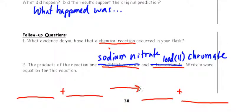Then follow-up questions. What evidence do you have that a chemical reaction occurred in your flask? So, was there a chemical reaction in your flask? If so, what, how did you prove it? So, earlier on in the chemistry that we looked at, five things that indicate whether a chemical reaction occurs. What is it?